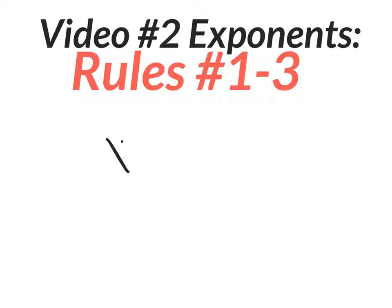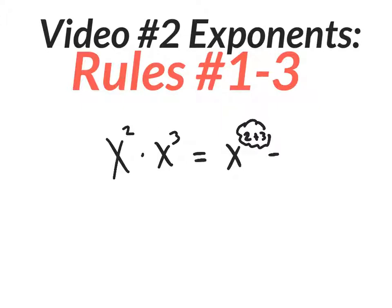We learned that when you had x to the second times x to the third, you end up adding the exponents. This is what happens — the two plus three — you just show your answer x to the fifth.